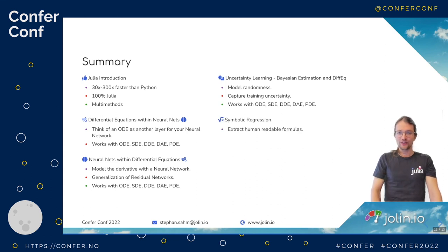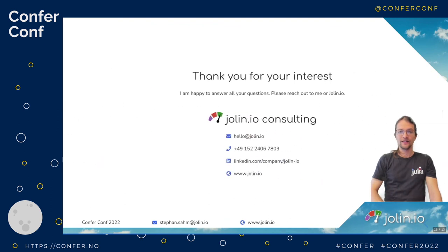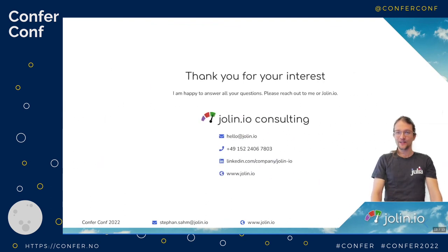We also looked into symbolic regression very briefly — check it out, it's super powerful as well. And at last, the benchmarks: the scientific machine learning system has by far the widest range of features and the highest speed, especially if you have problems with only a few parameters. With that, thank you for listening and thank you for your interest. I'm very happy to answer all your questions — please reach out to me on the Slack channel or later at stefan.saam@jolene.io or hello@jolene.io.